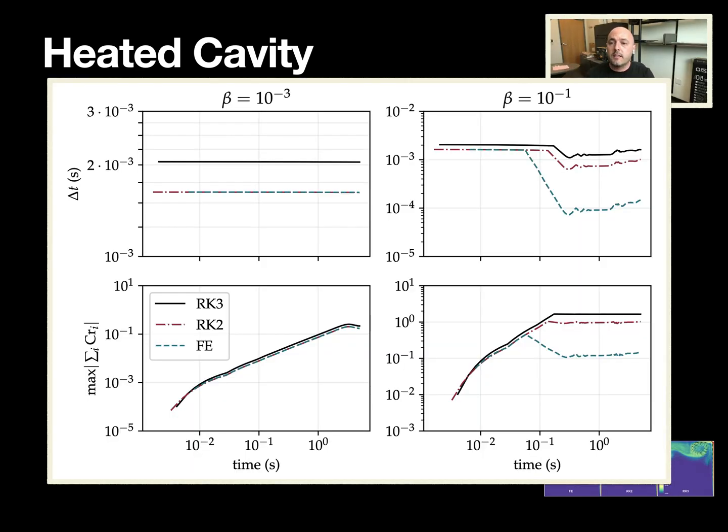For the lower heating rates, there's not much difference between all integrators because we're in the inner region. But with a higher heating rate, we're going to start initially for about 0.1 second in the inner region, all time steps are almost identical on that upper right plot. But then as the flow starts accelerating, you're going to see forward Euler time stepping drop because we transitioned to the outer region. But RK2, RK3 provide you higher Courant numbers and higher stable time steps.